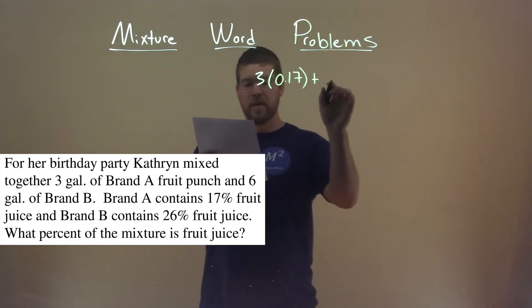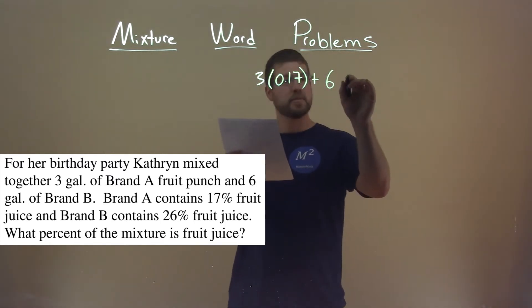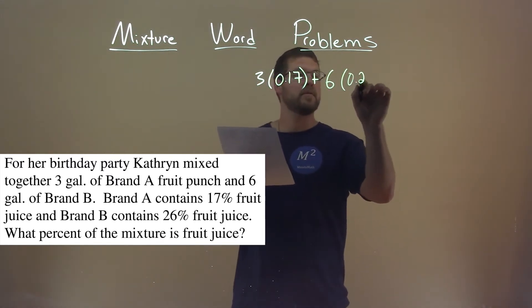We're combining that with six gallons of brand B, and that contained 26% fruit juice, so 0.26.